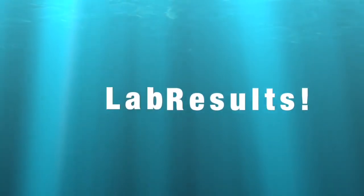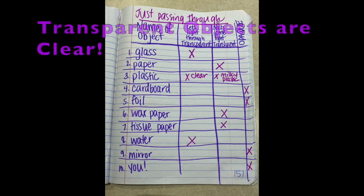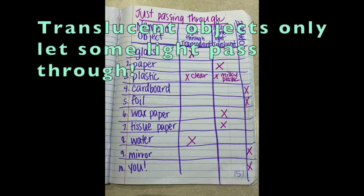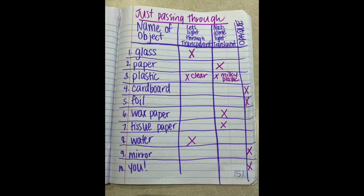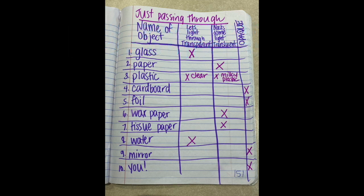Now let's look at our results. The transparent objects were glass, clear plastic, and water — they all share the characteristic of being clear. The translucent objects — paper, plastic, wax paper, parchment paper, and tissue paper — all let some light pass through but not all of it. And our opaque objects — cardboard, foil, mirror, the human body, and the bonus item wood — none of them allow light to pass through. We also say light cannot be transmitted or travel through opaque objects.